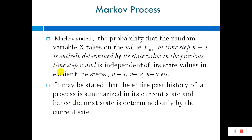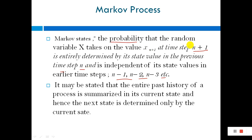The Markov property states that the probability that the random variable X takes on the value x_{n+1} at time step n+1 is entirely determined by its state value in the previous time step n, and is independent of its state at steps n-1, n-2, n-3, and so on.